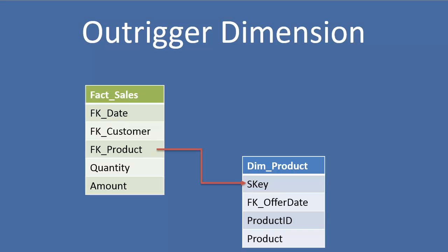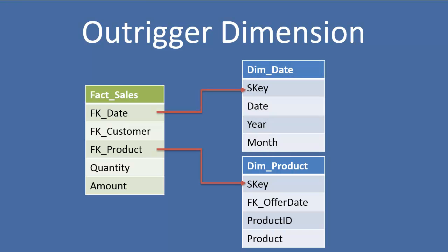So here's a quick example. It's a fact table again with a relationship to our dim product. It also has a relationship to our dim date. But you can see in product there's a foreign key offer date which is related to dim date as well.